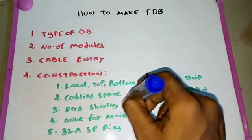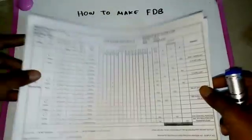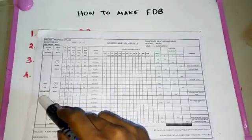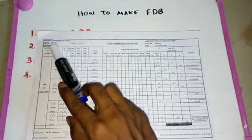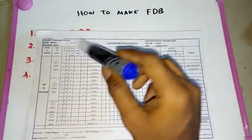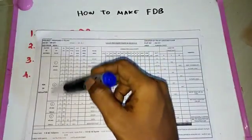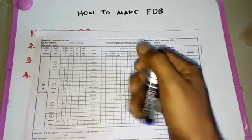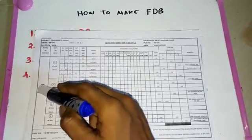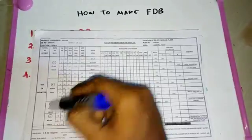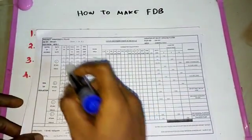RCCB shorting is another important step. In this DB, there are four RCCBs (ELCBs) available. For an ordinary DB, we can short all four ELCBs together using a shorting bus bar — running a wire from the 40-ampere isolator to the shorting bus bar and then to any of the ELCBs.